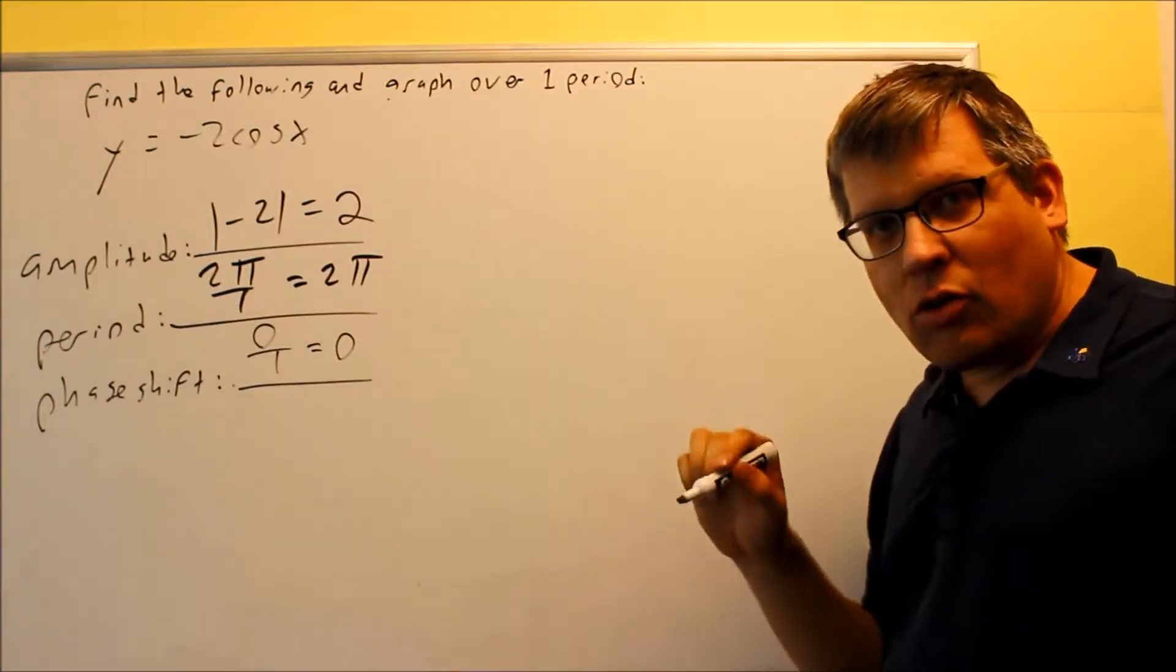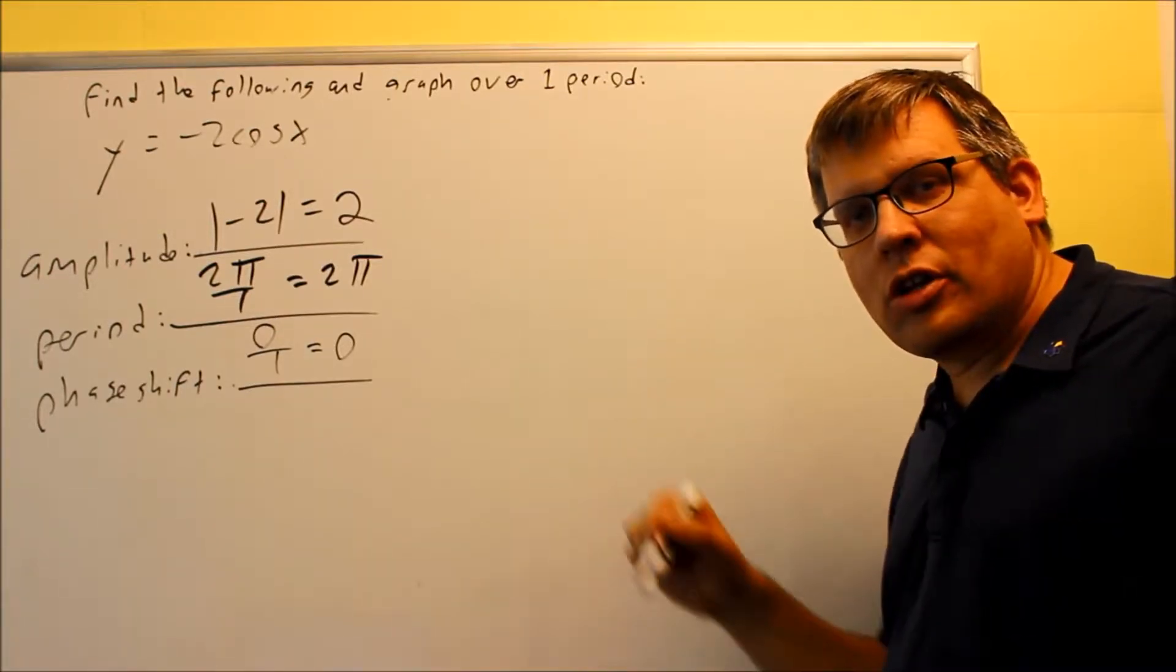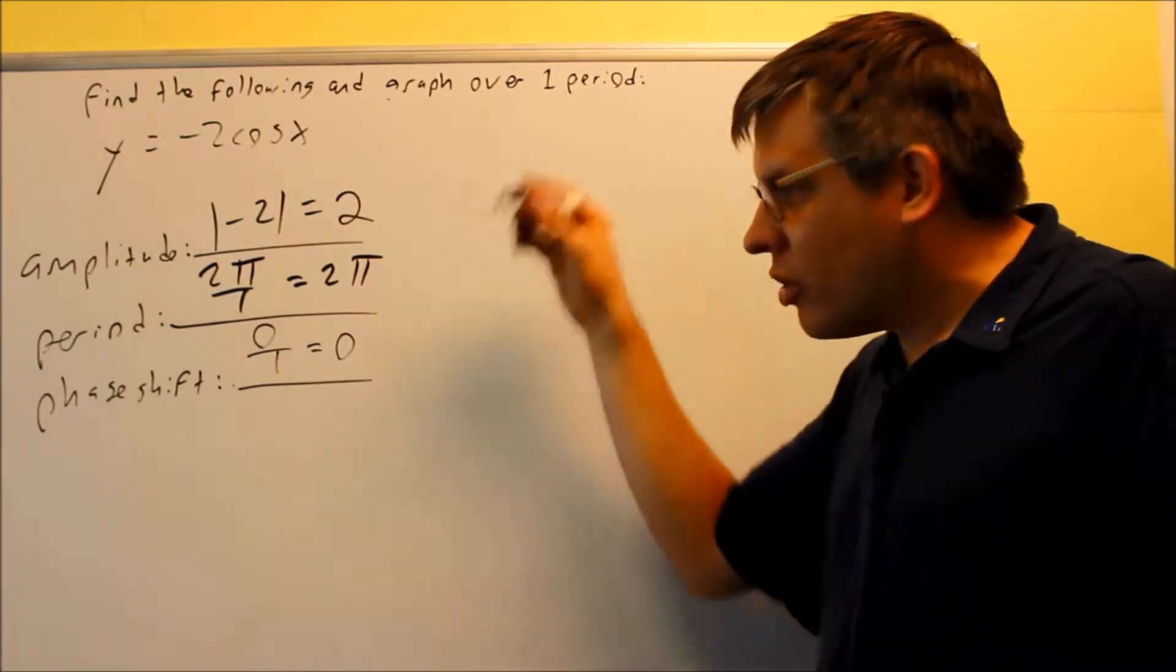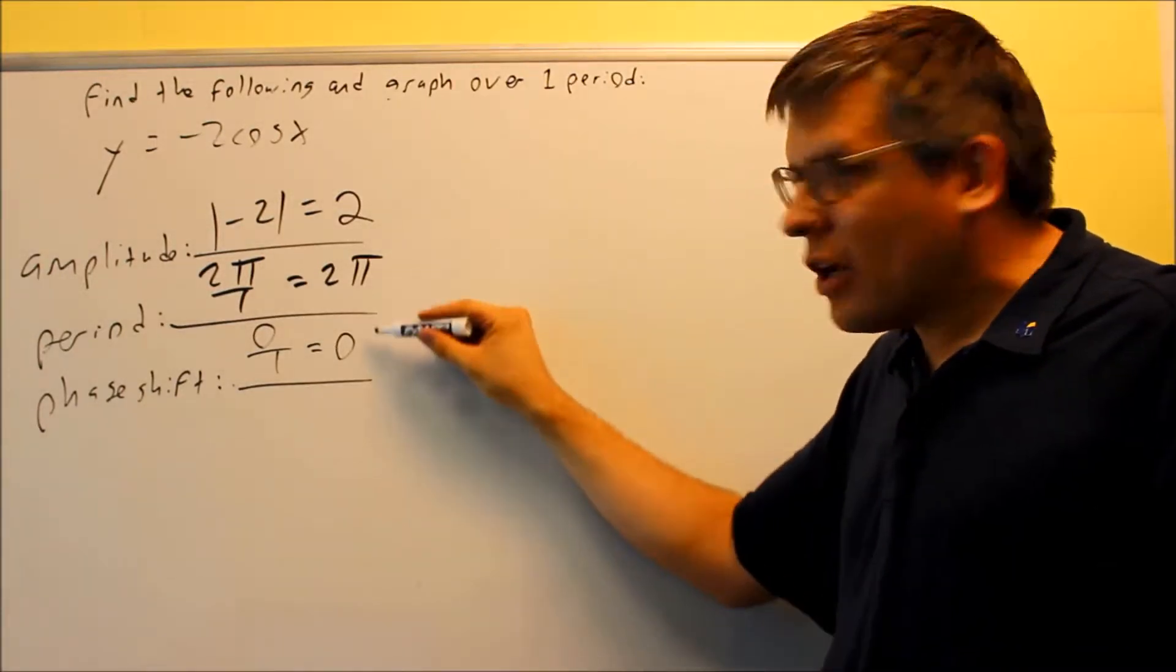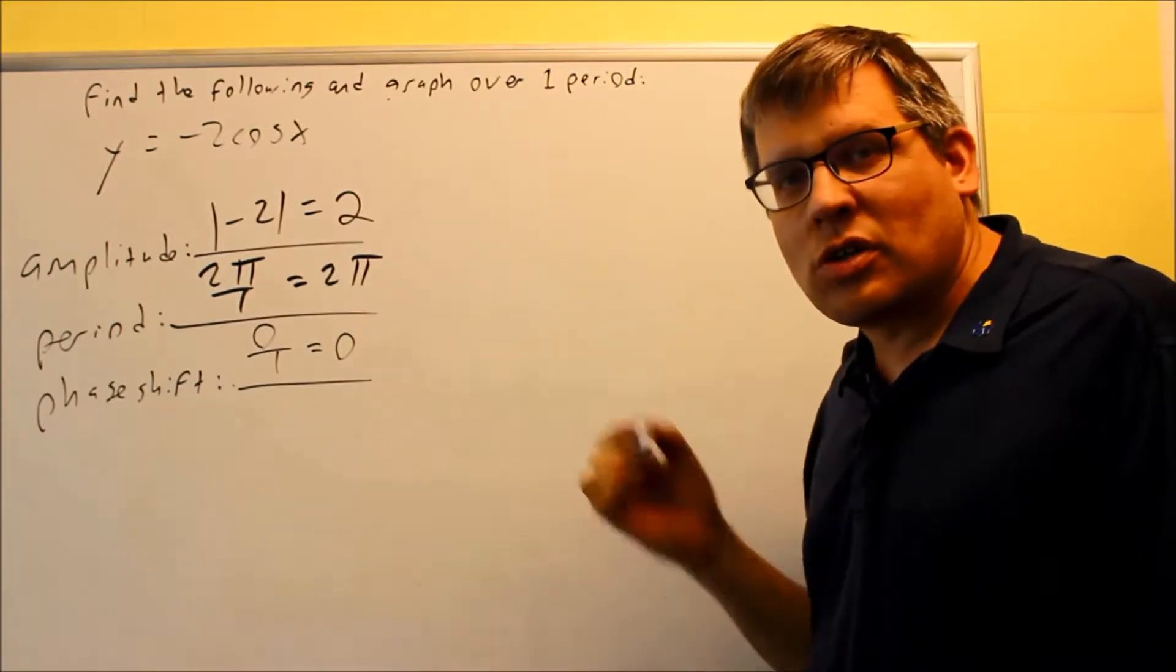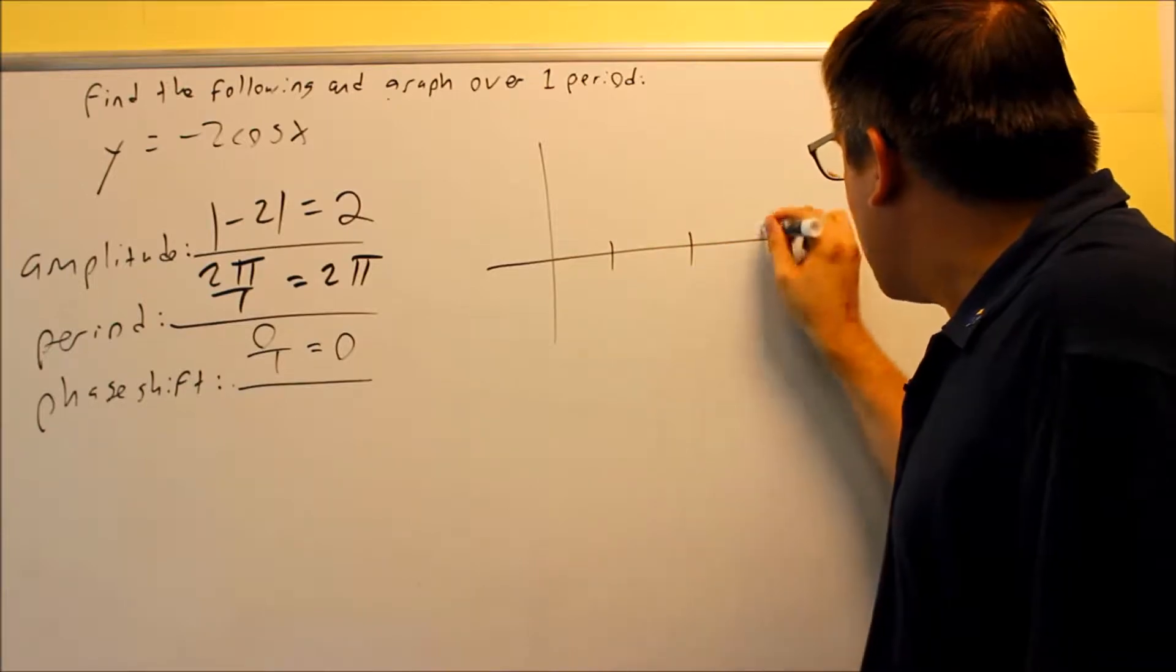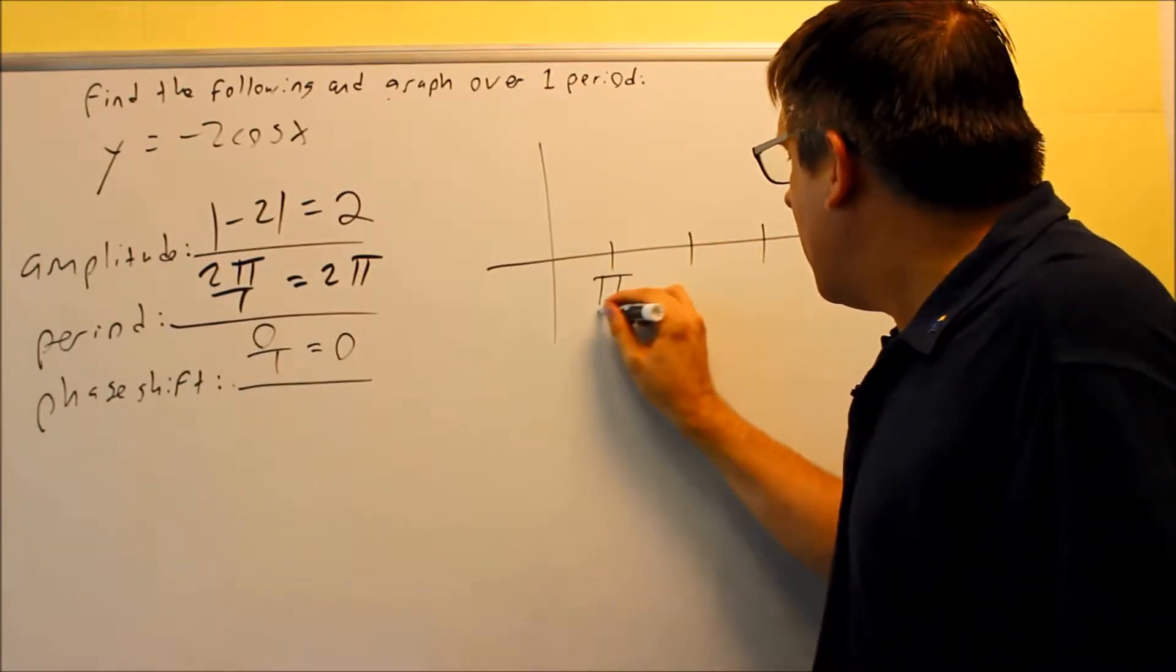Again, if we didn't know that though, we could always do this by quarter points, and I showed that before in the previous example with the sine graph. So we could do it that way, but again, if you recognize that the period is 2 pi and your phase shift is 0, then automatically we can just go right ahead and put down those same key points we had before initially.